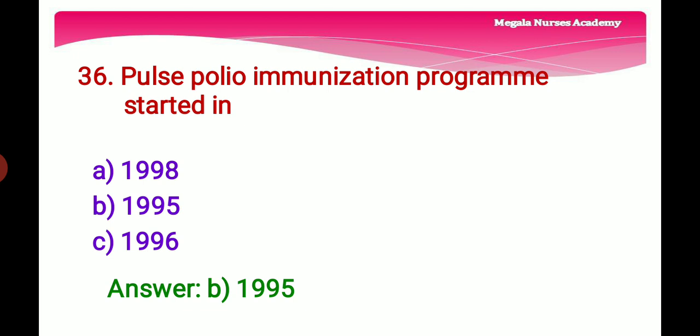Thirty-sixth question: The Pulse Polio Immunization Program started in — Option A: 1998, Option B: 1995, Option C: 1996. The right answer is Option B, 1995, because the Pulse Polio Immunization Program was launched in India in 1995 and is conducted twice in the early part of each year.